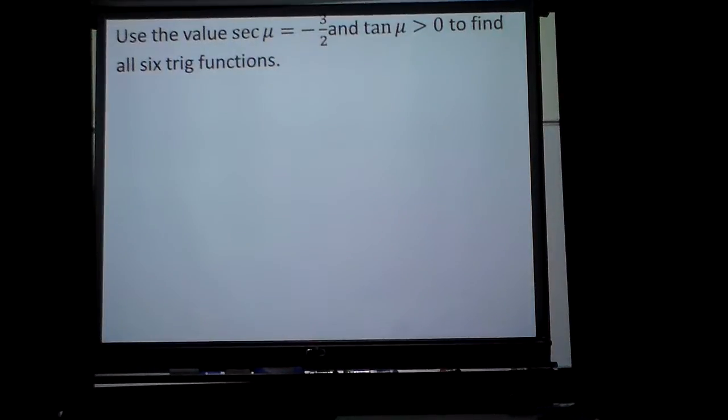Okay, let's use these identities now to solve a problem. Let's suppose secant u is negative 3 over 2 and tangent u is greater than 0, meaning tangent is positive. Find all six of our trig functions.